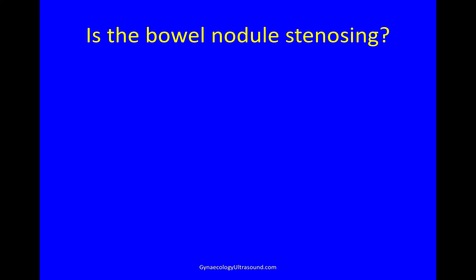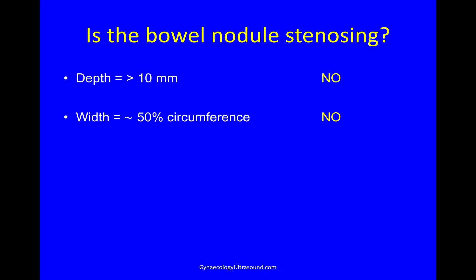So then you ask yourself: is the bowel nodule stenosing or not? There are some surrogate markers for this. Is it more than 10 millimetres in thickness? No, this one wasn't. Does it cover 50% of the bowel? No, it didn't. And it was more than 90 degrees in angle. So this bowel does not look like a stenosing lesion.